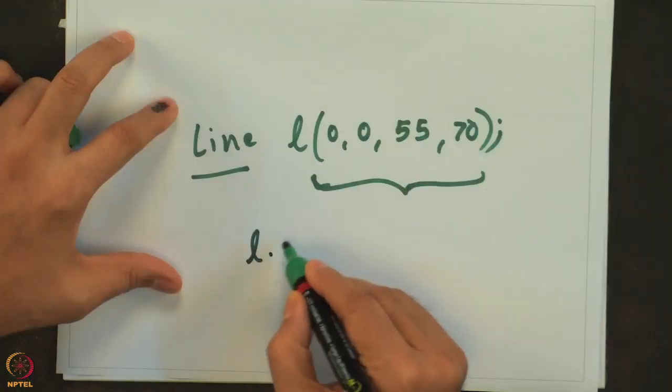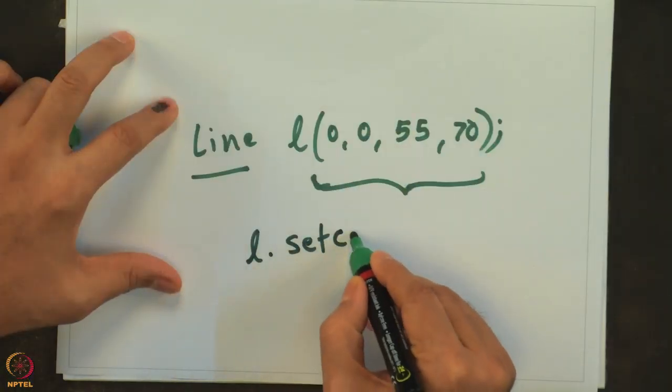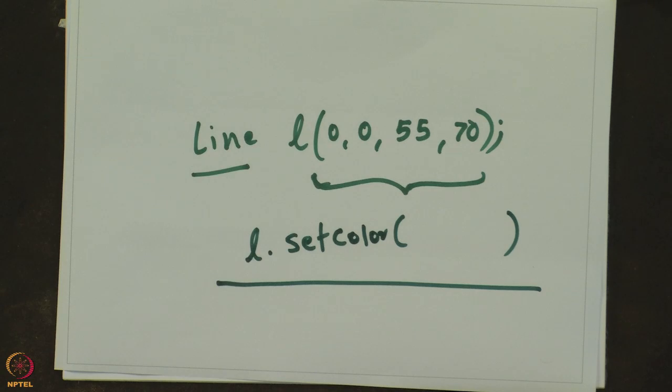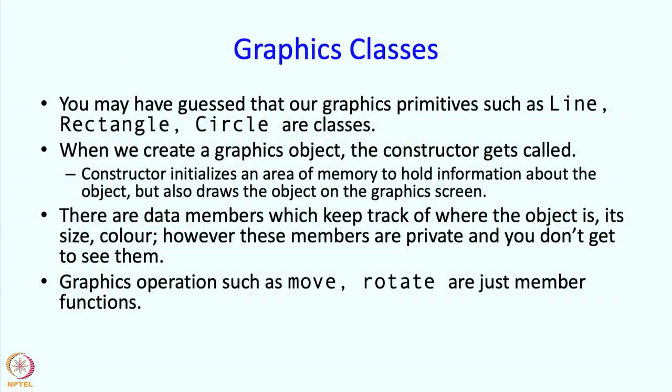How do you change the color? You have been given a member function — you can write something like l dot setColor or similar. You have been given a control panel which enables you to change colors. So you do not have to directly go in and change the color data, because that information is kind of complicated. Instead, it is better to have commands which are convenient for you to use.